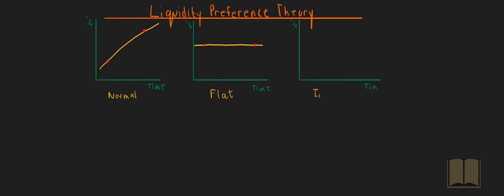Then lastly, you get a yield curve that's known as an inverted yield curve. This yield curve says that interest rates in the short term are higher than interest rates in the long term.